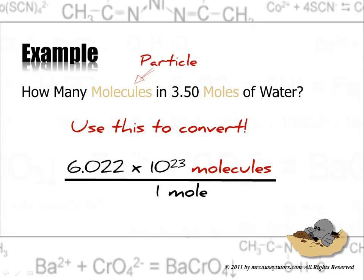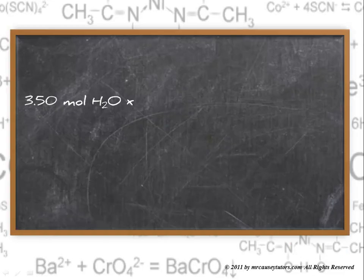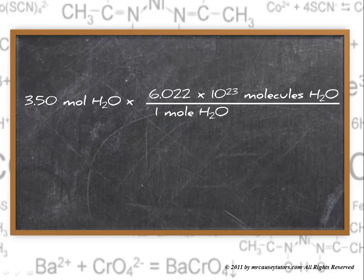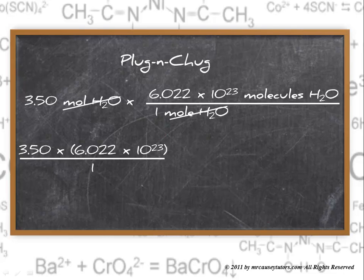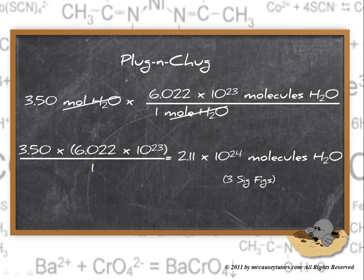Because a mole is a number, just like a dozen is 12. A mole is 6.022 times 10 to the 23. To the board. 3.50 moles H2O times our conversion. Cross our units out. Plug and chug. We have 2.11 times 10 to the 24 molecules of water. And of course 3 sig figs.